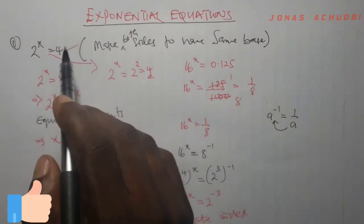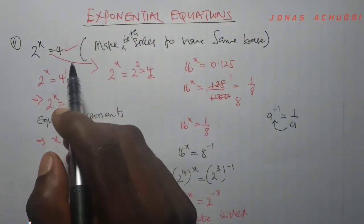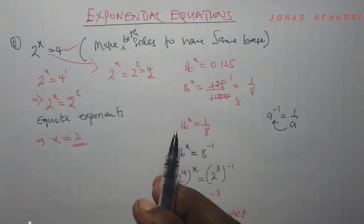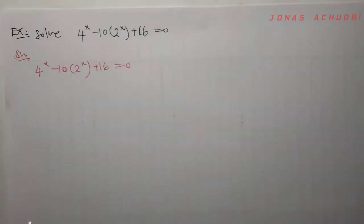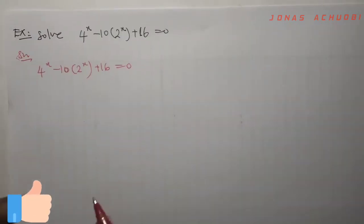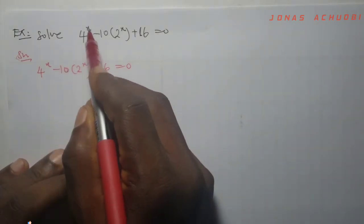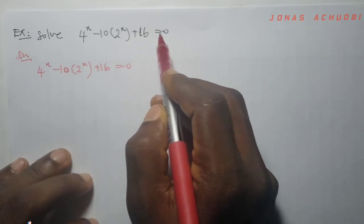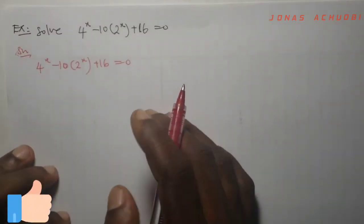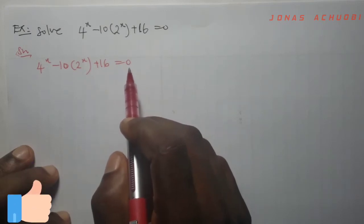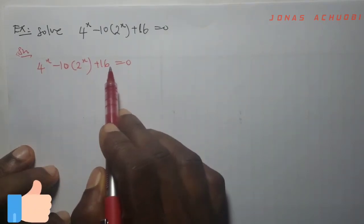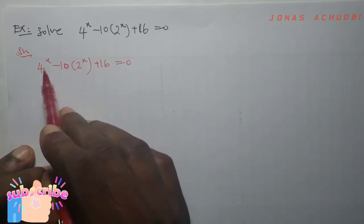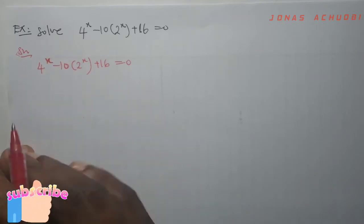However, if an exponential equation involves three terms or more, the procedure will be a little bit more tedious than this. I shall show you that with two more examples. For example, solve 4 raised to the power x minus 10 into 2 raised to the power x plus 16 equal to 0. There are three terms here. Only two terms have the power of x: 2x and 4x. So there are two tricks we are going to perform.